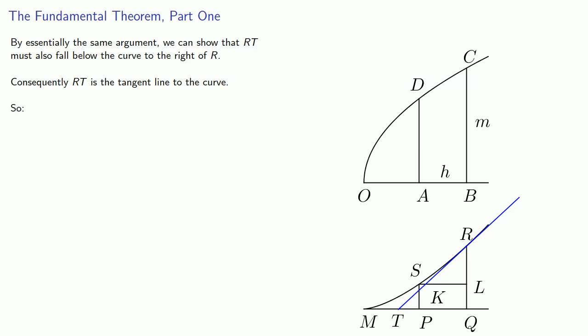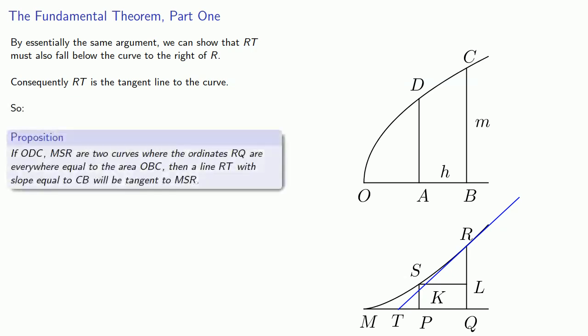We might summarize Barrow's result as follows. If ODC and MSR are two curves where the ordinates RQ are everywhere equal to the area OBC, then the line RT with slope equal to CB will be tangent to MSR. Or if we introduce some very modern notation,